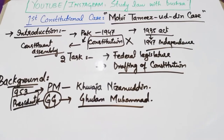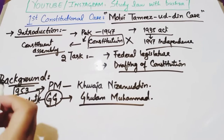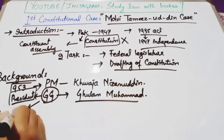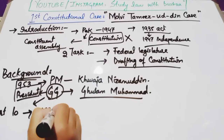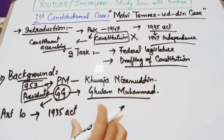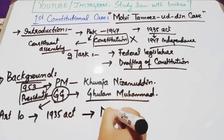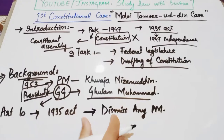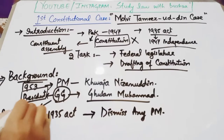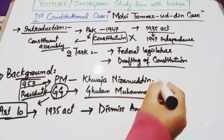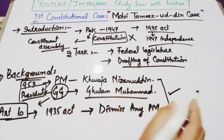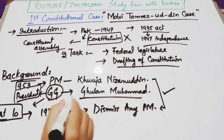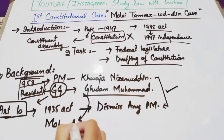جو ہمارے پاس interim constitution تھا — یعنی Government of India Act 1935 — اس کے Article 10 کے according governor general ملک غلام محمد کے پاس یہ power تھی کہ وہ کسی بھی prime minister کو dismiss کر سکتے ہیں۔ انہوں نے اپنی اس power کا use کرتے ہوئے خواجہ نظام الدین کو dismiss کر دیا۔